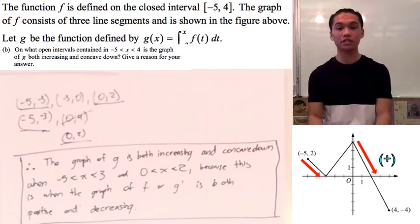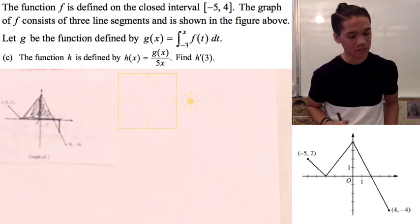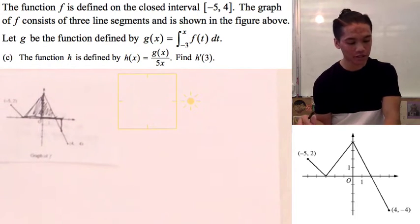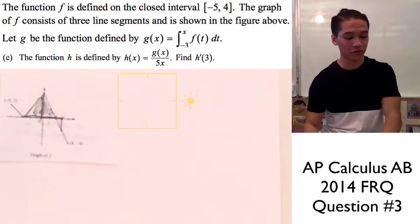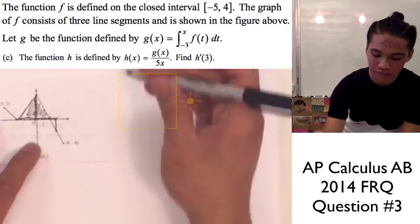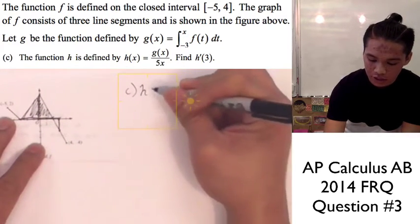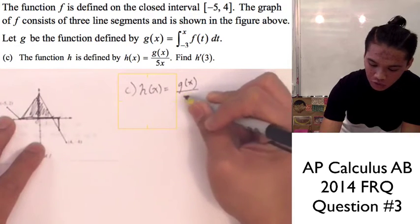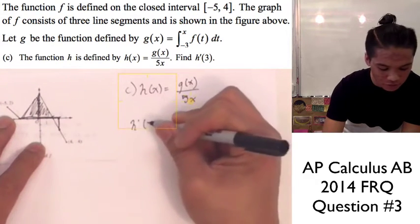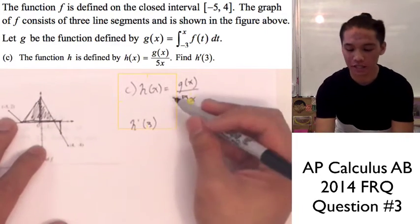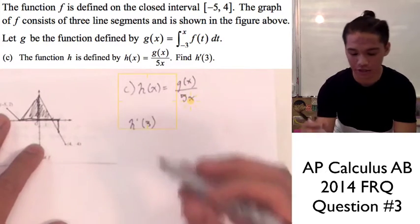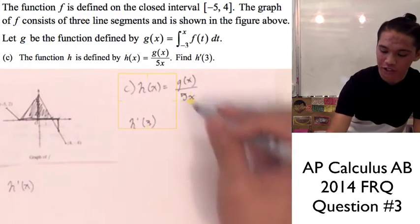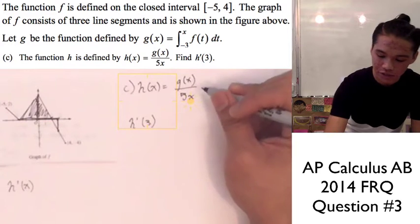Now we can move on to part C. Part C says the function h is defined by h of x equals g of x over the quantity 5x, and it's asking us to find h prime of 3. To get there, we have to find h prime of x, which requires the derivative of g of x over 5x. For this, we use the quotient rule — low d high minus high d low over low squared.